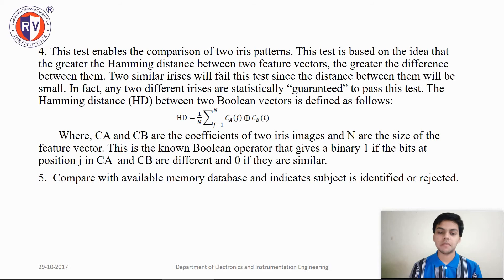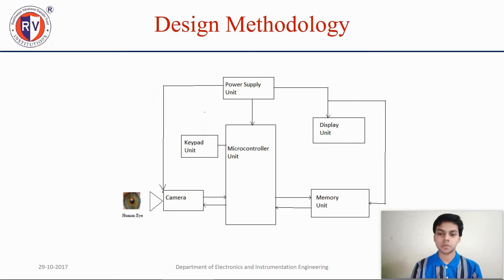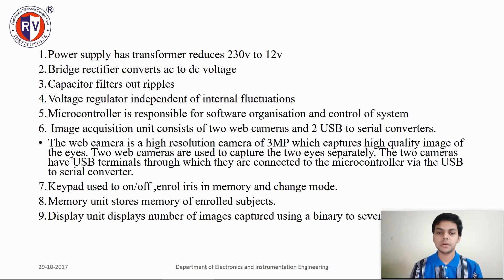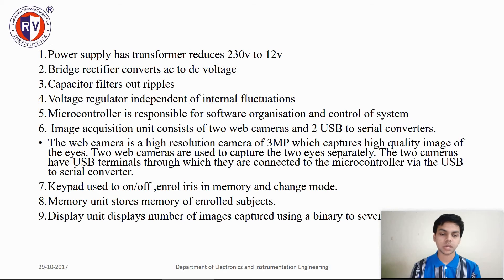They are then compared with the available memory database and the system identifies or rejects the subject. The design methodology: the power supply has a transformer which reduces voltage from 230V to 12V. A bridge rectifier converts AC to DC voltage. A capacitor filters out the ripple in the voltage and a voltage regulator handles internal fluctuations. The microcontroller is responsible for software organization and control of the system. The image acquisition unit consists of two web cameras and two USB to serial converters. The web camera has a high resolution of 3 megapixels and captures high quality images of the two eyes. A keypad is used to turn on and off, enroll iris in memory, and change mode. The memory unit stores the enrolled subjects, and the display unit shows the number of images captured using a binary to 7-segment display.